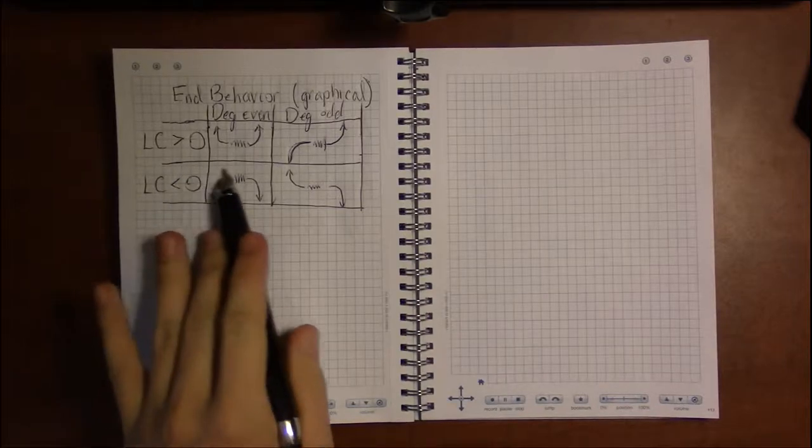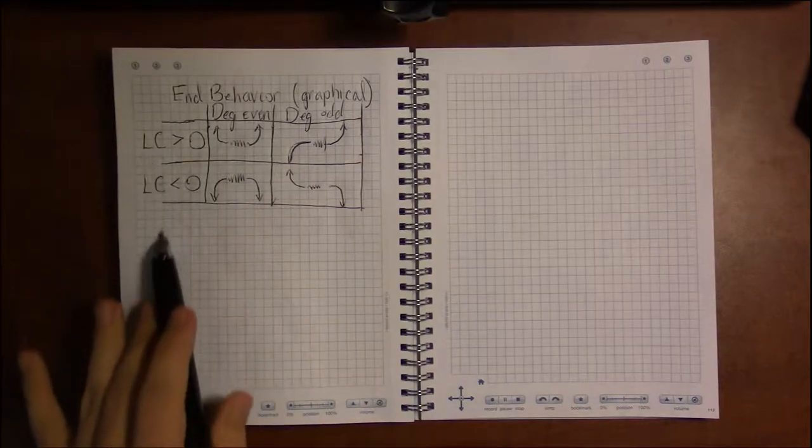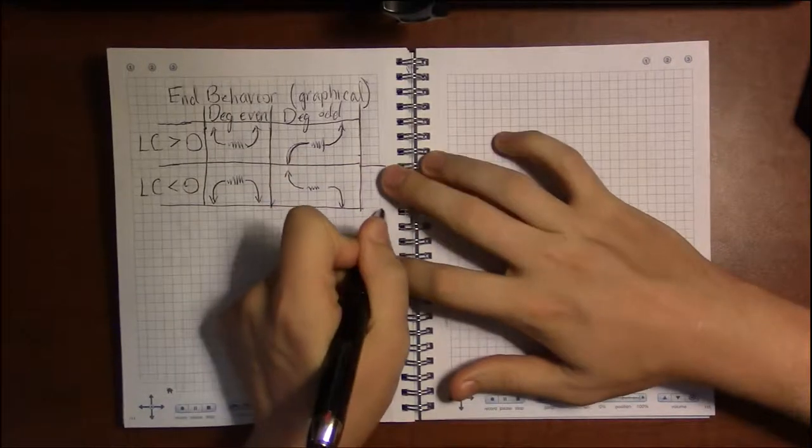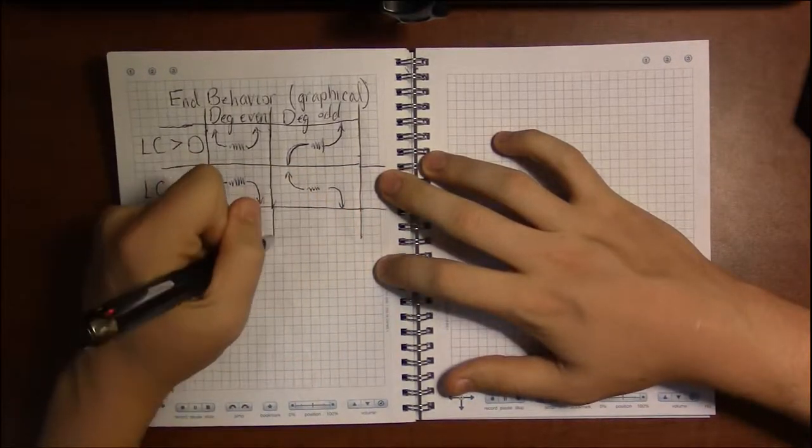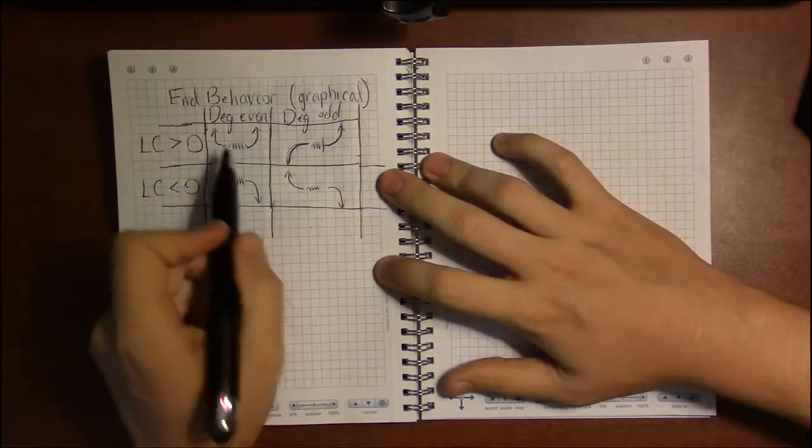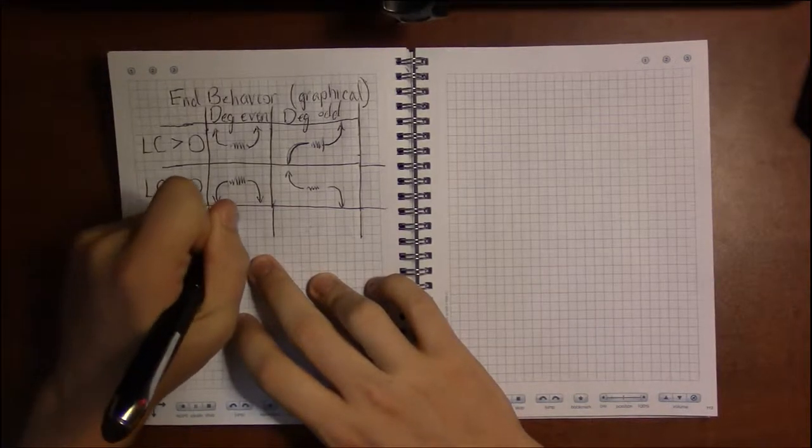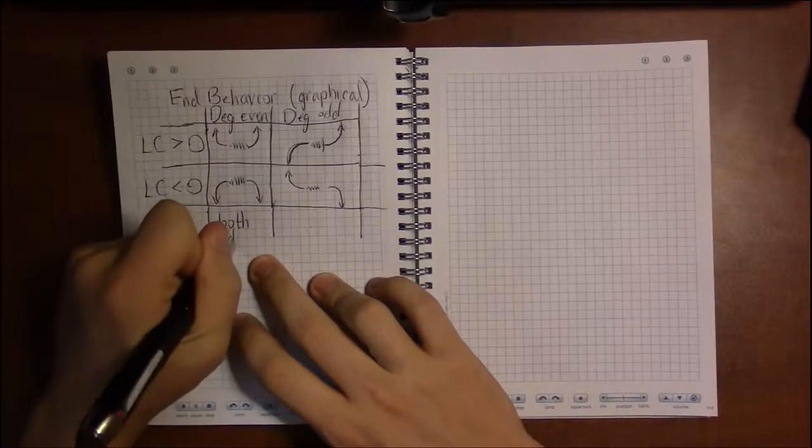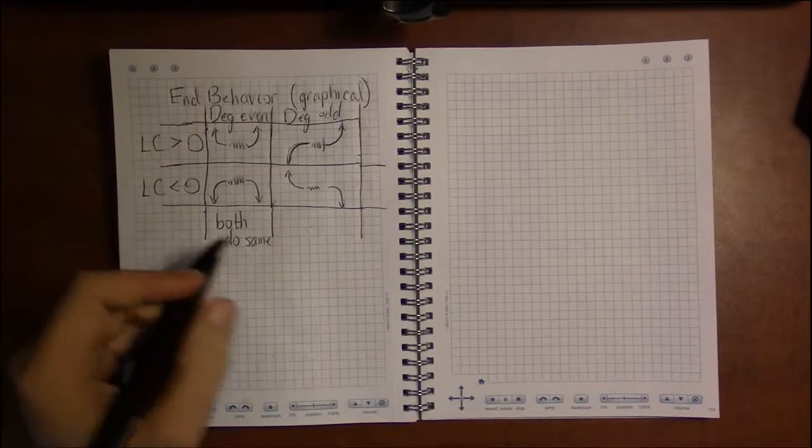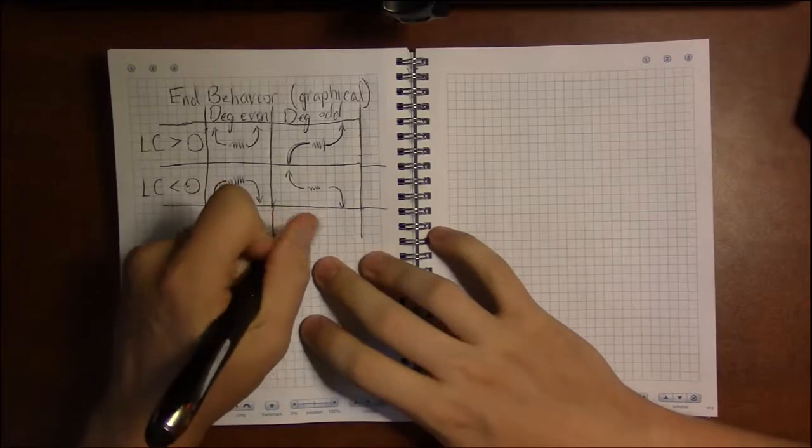So how do you determine end behavior just based upon the degree and the leading coefficient? Look at the similarities across rows and across columns. With the degrees, it's fairly easy: if the degree is even, both ends (both the left and right) do the same thing – they either both go up or both go down. But if the degree is odd, one goes up, the other goes down.